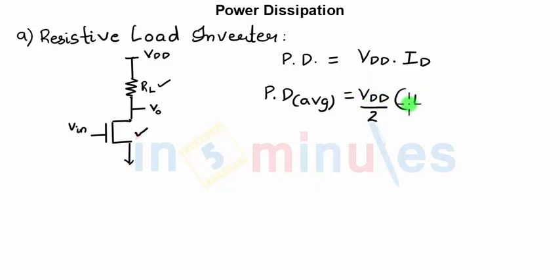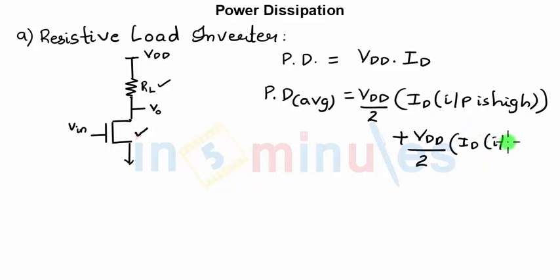VDD by 2 into ID when my input is high, plus VDD by 2. I'm dividing my supply voltages into two parts, assuming that my input will have 50% duty cycle. For half the period it would be high, for half the period my input would be low. ID when my input is low.